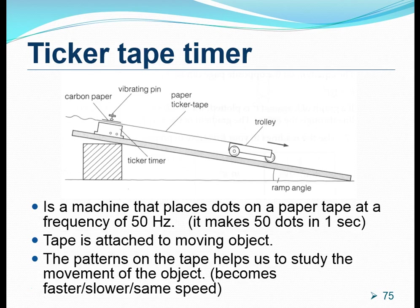So let's find out what is a ticker tape timer. A ticker tape timer is simply a machine that places dots on a paper tape. The machine is over here, as shown in the diagram, and it places dots on this piece of paper which is attached to a trolley. Once the trolley is allowed to move down the slope, a series of dots will naturally appear on the tape as it is being pulled through the vibrating pin.